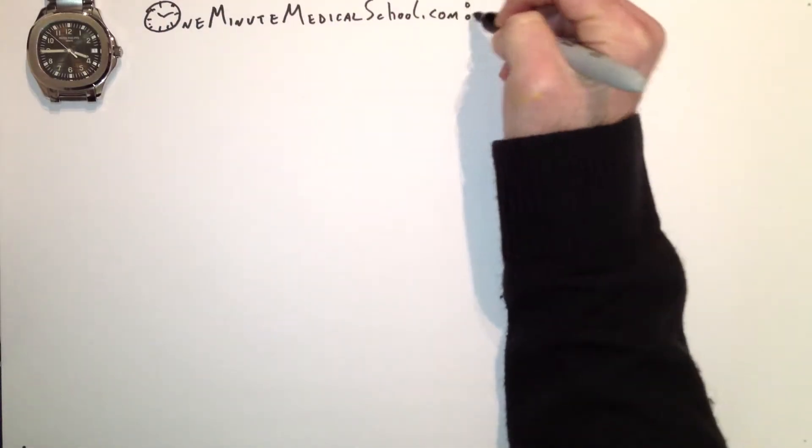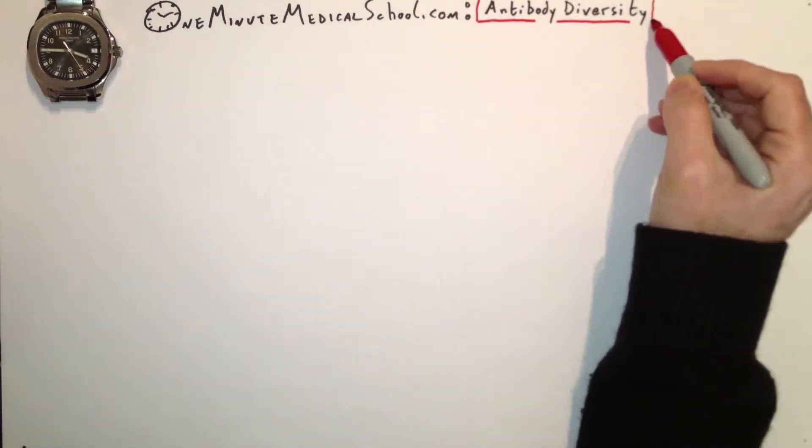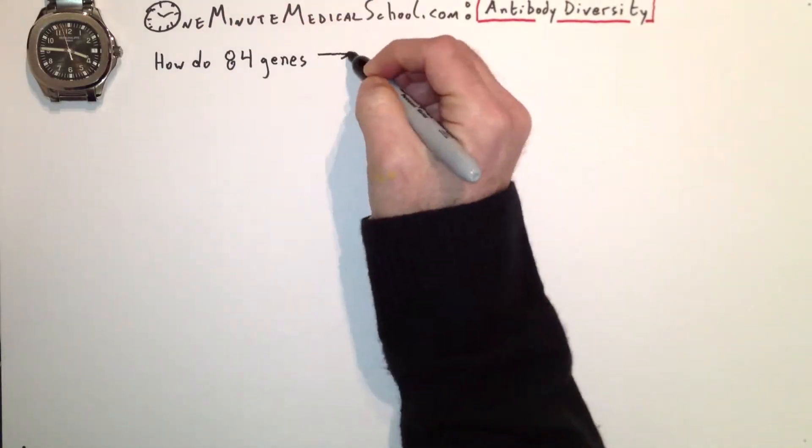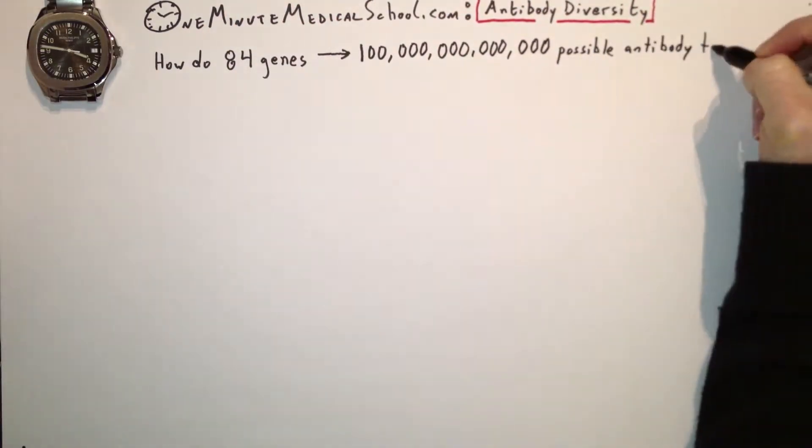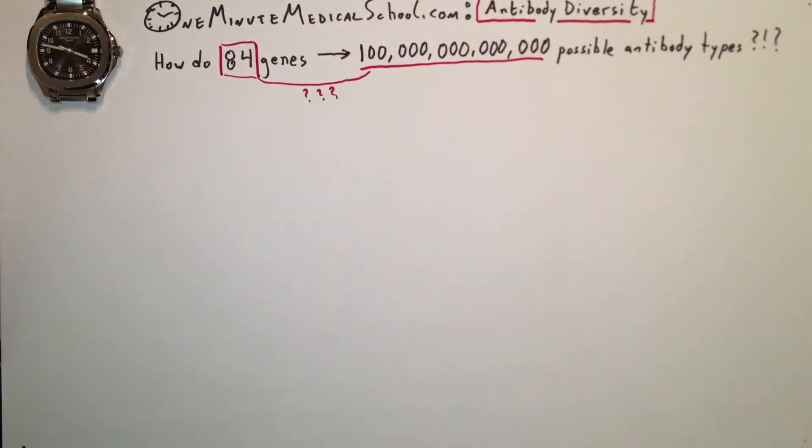Antibody diversity is the biological phenomenon that leads to a small number of genes, 84 exactly, leading to 100 trillion possible antigens that your antibodies can recognize. How does this happen?